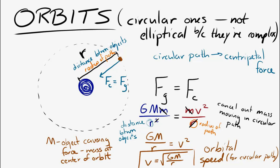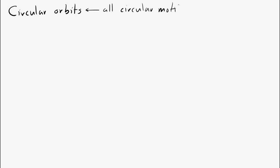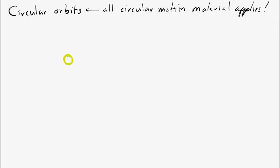In orbits, the object is traveling in a circular path, so all of the equations and information about circular motion apply here. Let's look at an example: the earth going around the sun. We'll assume it travels in a circular path — it's actually a slight ellipse — and let's find the period of the earth as it goes around the sun.